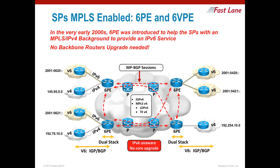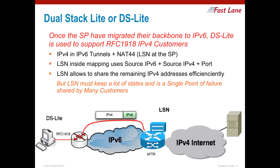For service providers with MPLS there is no choice — it is 6PE or 6VPE. The beauty is that you do not need to change the backbone; you just need to add 6PE at the edge and you will immediately provide an IPv6 service to your customers.